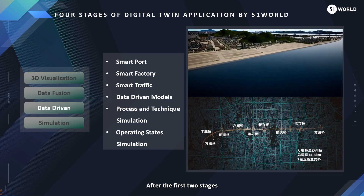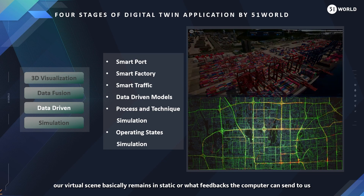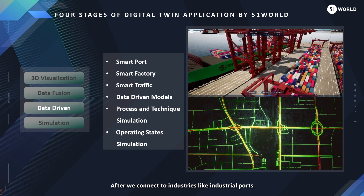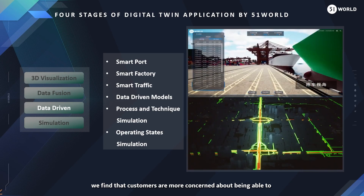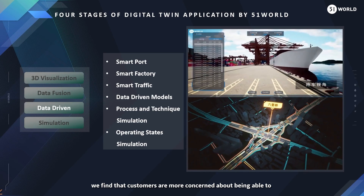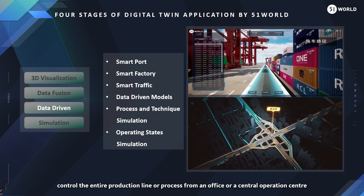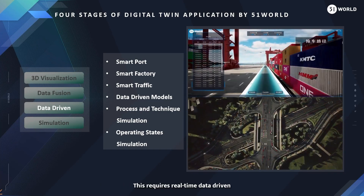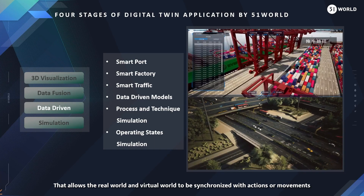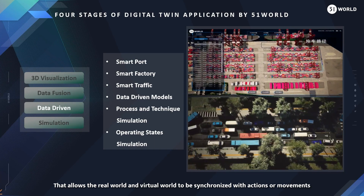After the first two stages, our virtual scene basically remains static or limited to feedback the computer can send to us. After we connect to industries like industrial ports, we find that customers are more concerned about being able to control the entire production line or process from an office or a central operations center. This requires real-time data-driven capability, allowing the real world and virtual world to be synchronized with actions or movements.